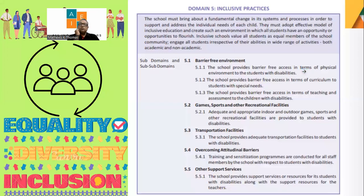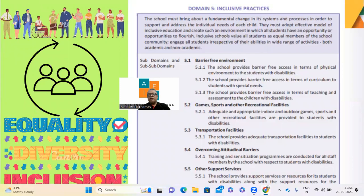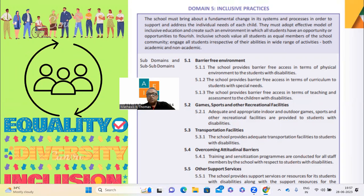Domain five is inclusive practices. Are there adequate resources for children with special needs or disabilities? Is there a ramp program, a lift in the school, training programs to sensitize other students regarding disability? Are there support services for students with disabilities? Every student, irrespective of their traits, is equal, and we must provide equal opportunities — whether in games, co-curricular activities, sports, transport, or by assigning a helper. All barriers must be removed.